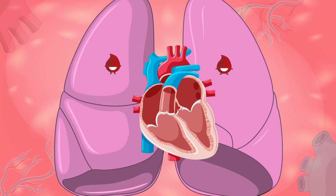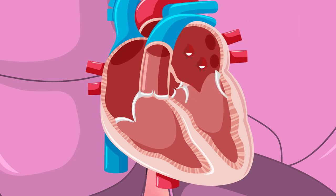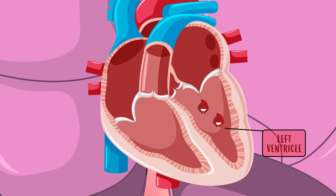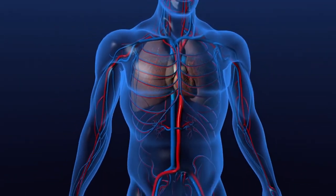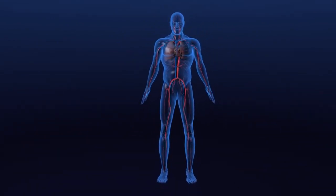When it is already oxygenated, it goes back to the heart, reaching the left atrium. From where it will pass through the third valve, until the last cavity — the left ventricle. Finally, the heart sends this now oxygenated blood through the fourth and last valve towards the rest of the body. And it starts again!